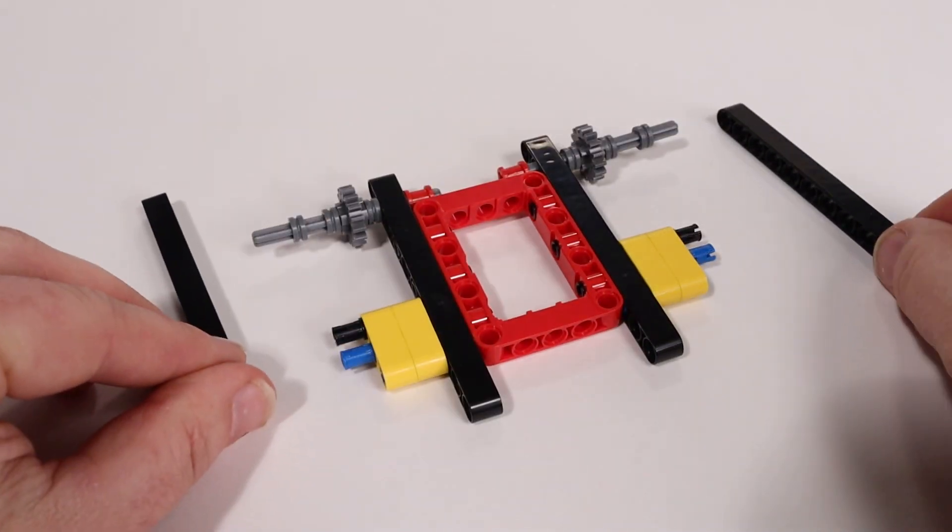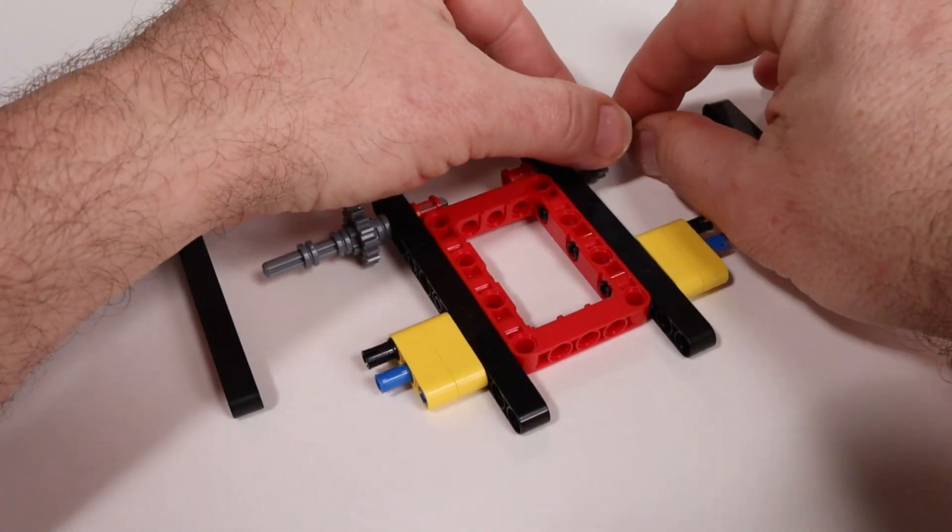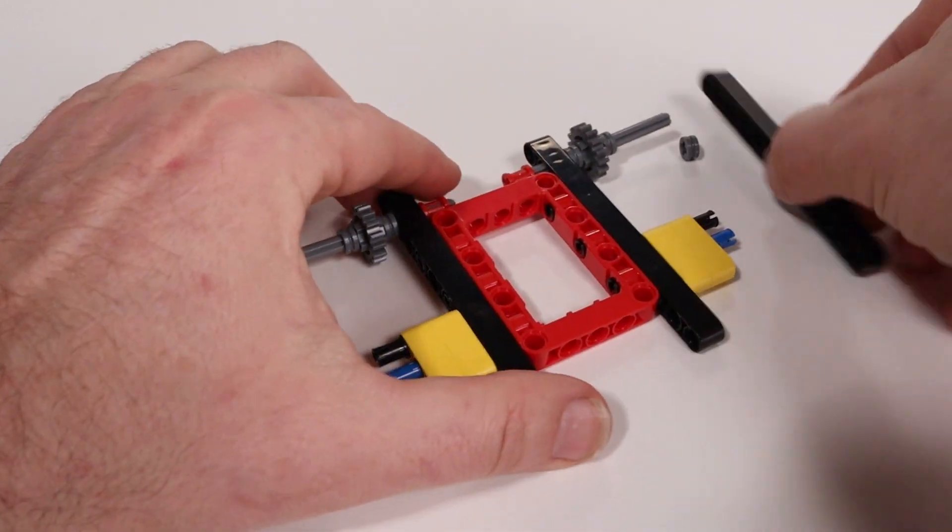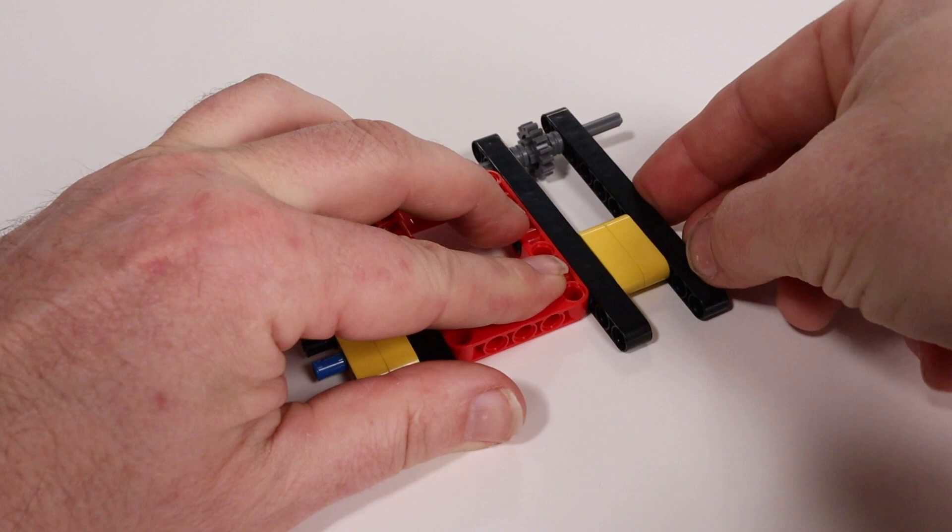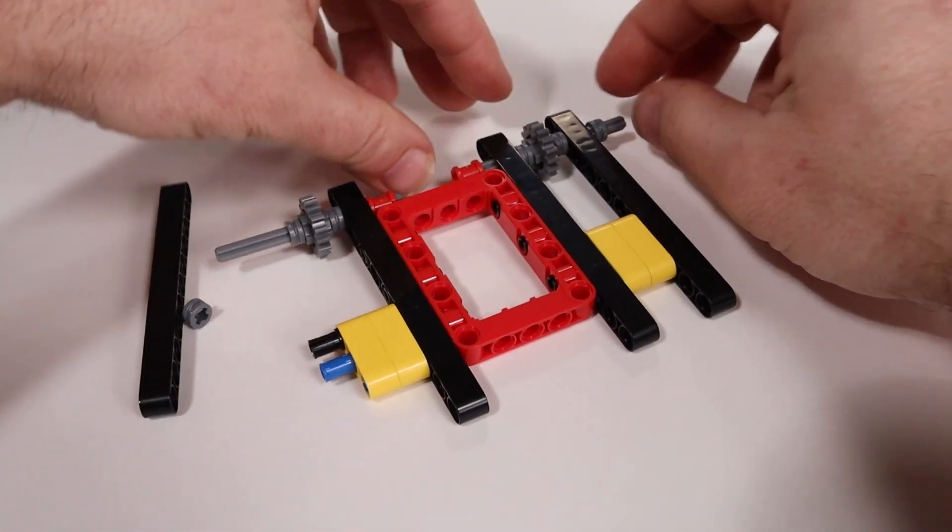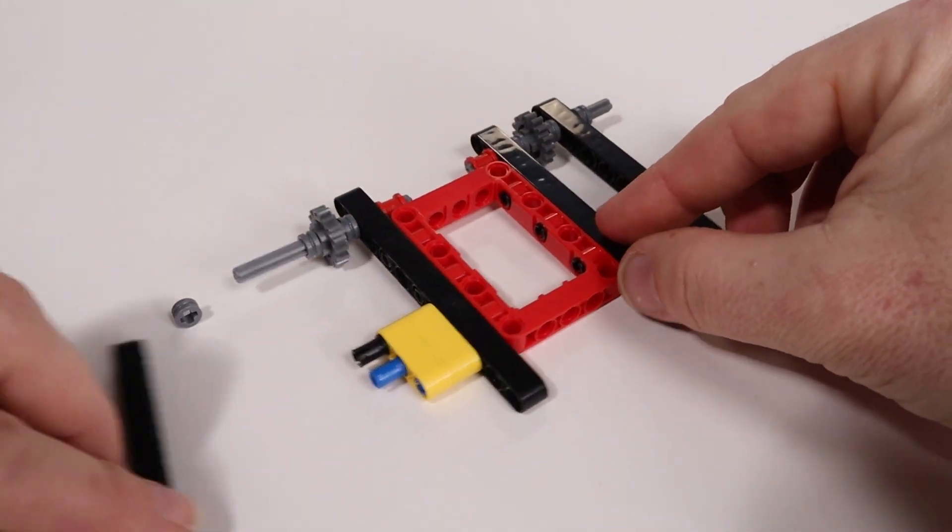Now we'll add the outside beams. Before we do, remove the half bushing from the front axle. Now add the half bushing back on. The eleven hole long beam should line up with the existing one already on the frame.